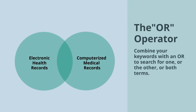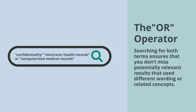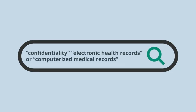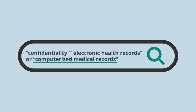Other operators can also be used. For example, combine your keywords with an OR to search for one or the other or both terms. Searching for both terms ensures that you don't miss potentially relevant results that use different wording or related concepts. Be careful — this search isn't set up properly yet. Right now, it will look for articles on confidentiality and electronic health records, or articles on computerized medical records, but not necessarily articles on confidentiality.